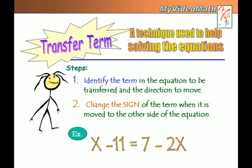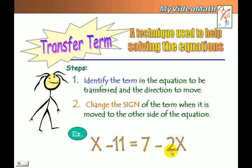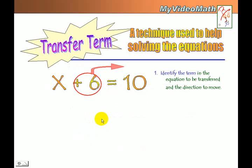Example: x minus 11 equals 7 minus 2x. If I move negative 11 to the other side, it becomes positive 11. If I move positive 7 to the other side, it becomes negative 7. If I move x to the other side, it becomes negative x. And if I move negative 2x to the other side, it becomes positive 2x.